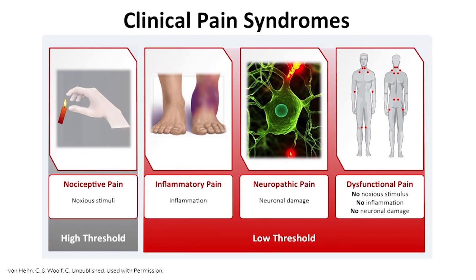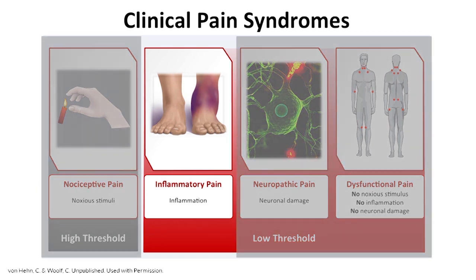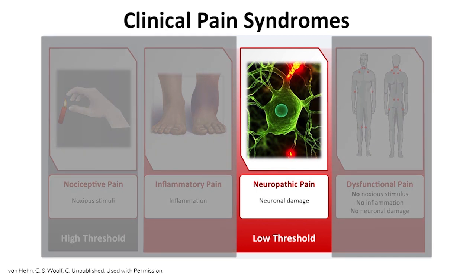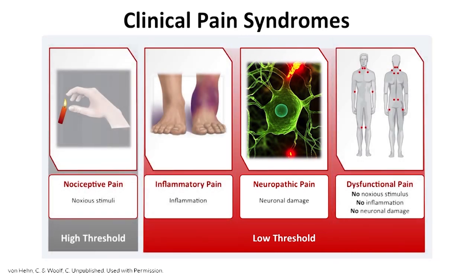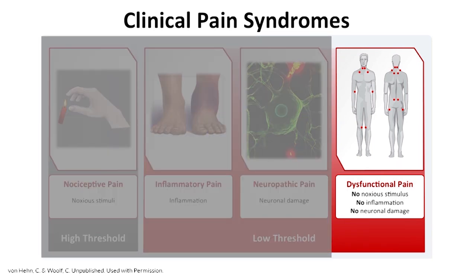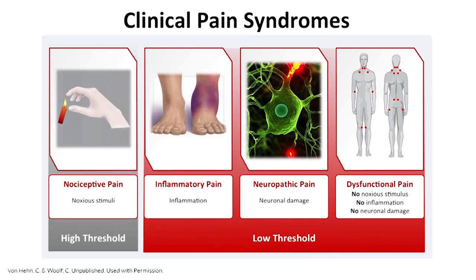We can look at clinical pain syndromes as having several major subtypes. One subtype is inflammatory pain — the pain associated with tissue damage and inflammation. Another is neuropathic pain, which occurs in the presence of damage to the nervous system itself, either peripheral or central. Finally, we have a group only relatively recently recognized: patients who have no noxious stimulus, no tissue damage, and no detectable damage to the nervous system. Instead, these patients seem to have an abnormal functioning of the nervous system, and this is why we call this group as having dysfunctional pain.